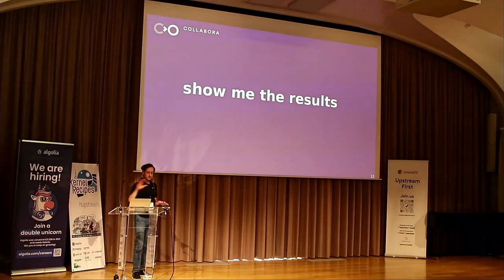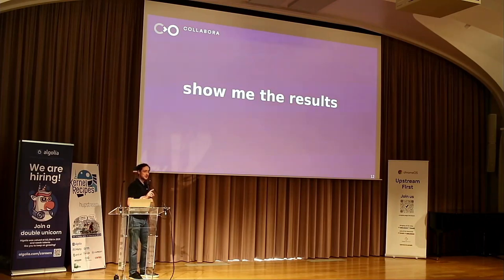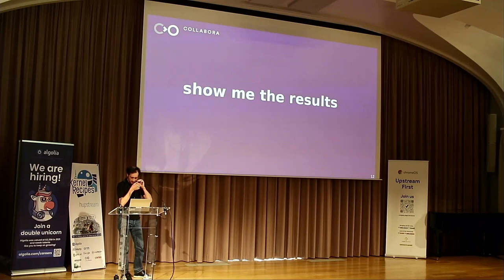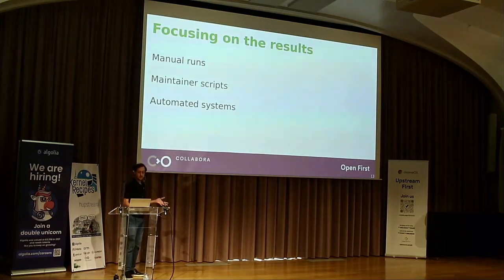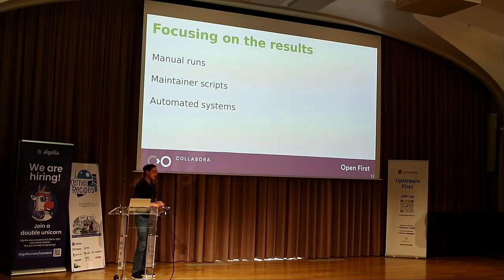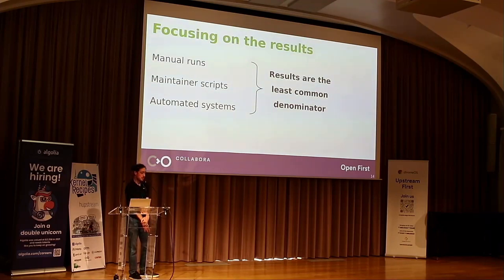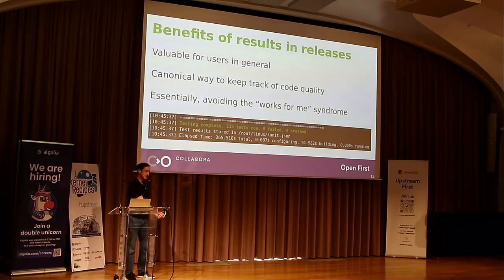Now this is the main point of this talk: how to actually include results when you have an upstream kernel release. What's really important is focusing on the results, not really how they got run. Tests can be run by hand, via a maintainer script or local workflow, or by an automated system. At the end of the day, it's going to be some results — the least common denominator. We can make a summary of these results and have it included in a release, so when you check out a version of the Linux kernel, you can tell directly which tests have been run. That's the idea.